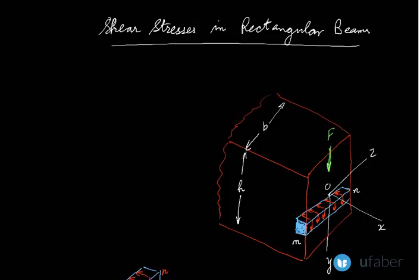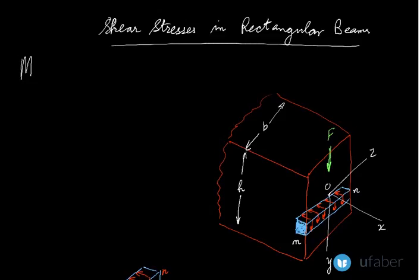To start off, let us assume that a beam is being subjected to non-uniform bending. By non-uniform bending, we mean that the beam is being subjected to both a bending moment M as well as a shear force F.